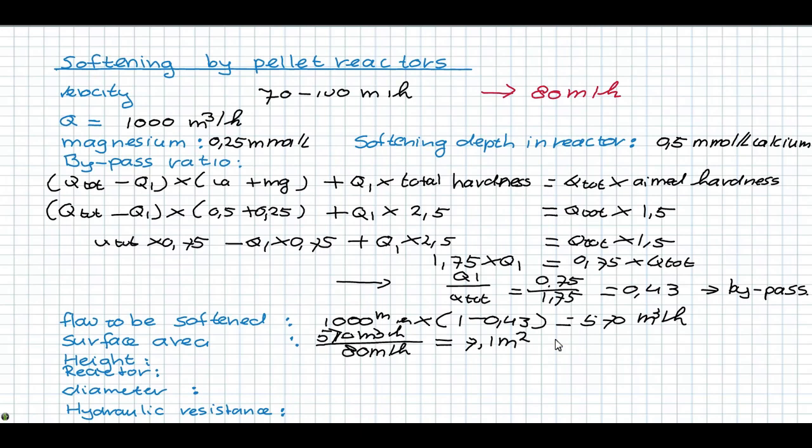The total height of a softening reactor is about 6 to 7 meter. And this is when caustic soda is used. In case of lime dosing, the height must be even higher. And to be flexible during operation, a minimum of 3 reactors should be installed.